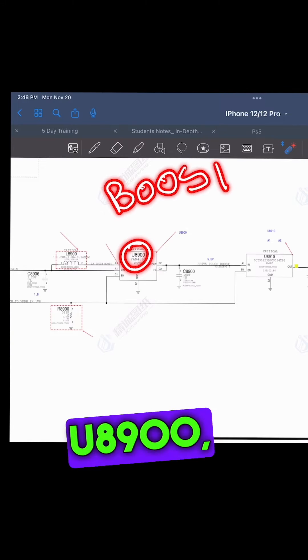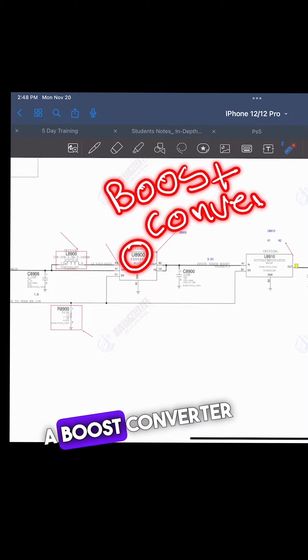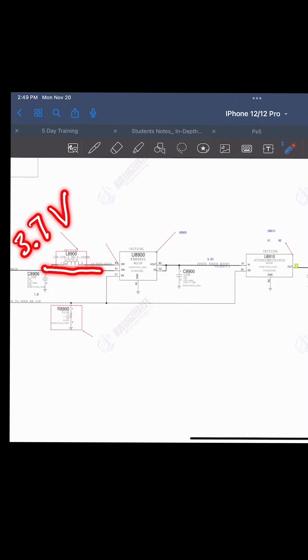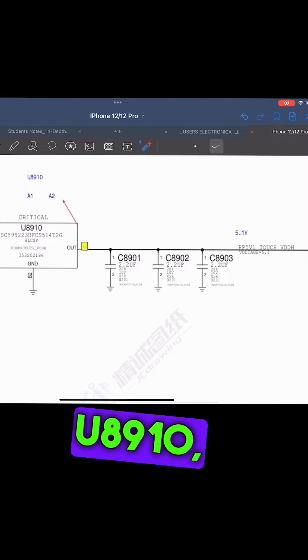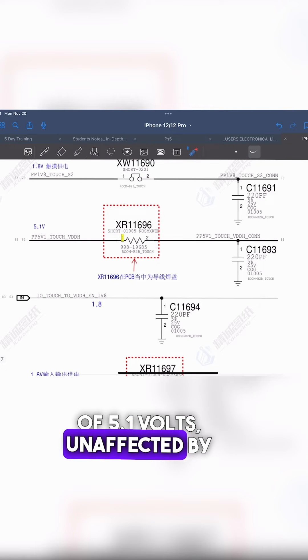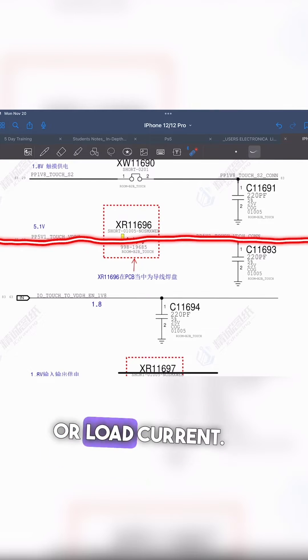This line comes from U8900, a boost converter that increases the input from 3.7 volts to 5.5 volts. It then goes through an LDO, the U8910, to maintain a stable output voltage of 5.1 volts, unaffected by changes in input voltage or load current.